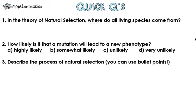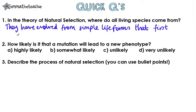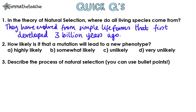Let's try some quick questions. Pause the video, give them a go, and press play when you're ready. One: in the theory of natural selection, where do all living species come from? They have evolved from simple life forms that first developed over three billion years ago. Two: how likely is it that a mutation will lead to a new phenotype? This is very unlikely — it doesn't happen often.